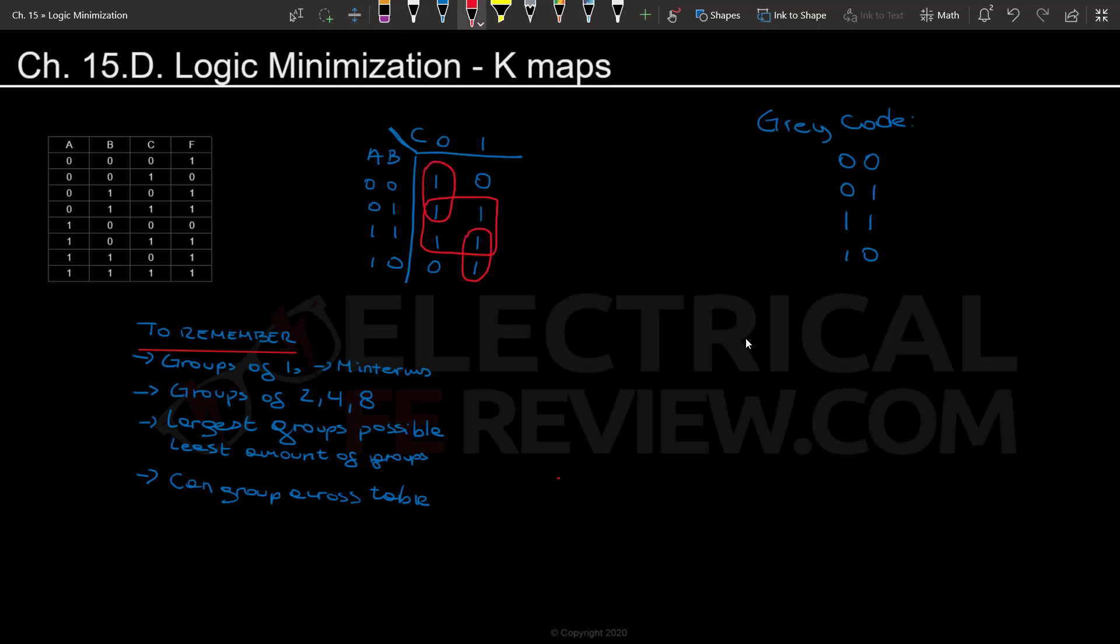And there you go. Now we have grouped all the ones. They are all together and we don't have redundant ones. It is important to remember that redundant ones are not necessary. So let's say if we wanted to do a group like so, it is completely unnecessary and it's already grouped. That one is already accounted for.